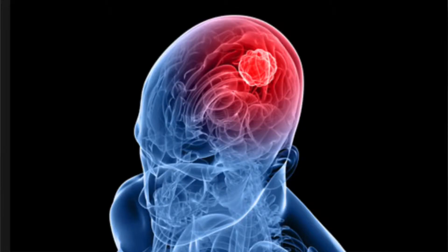Now in terms of what causes visual aura, we don't know exactly. We think that there is a change in the blood flow to the back of the brain where our vision center is. We believe that there's constriction of blood vessels in that area. There's an electrical change that happens within the brain that leads to these visual symptoms.